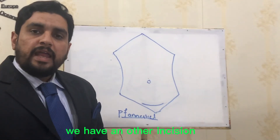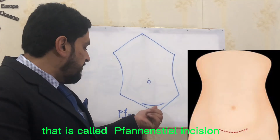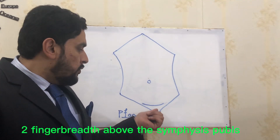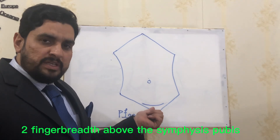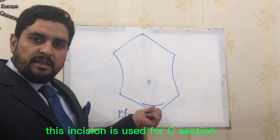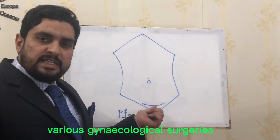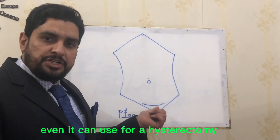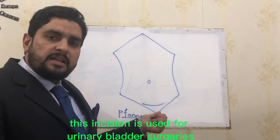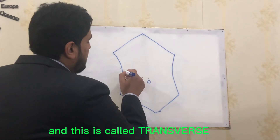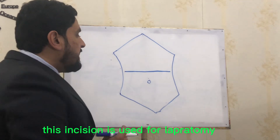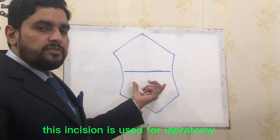We have another incision called the Pfannenstiel incision. It is given two finger-breadths above the symphysis pubis. This incision is used for C-section, various gynecological surgeries, and even for hysterectomy. It is also used for urinary bladder surgeries.